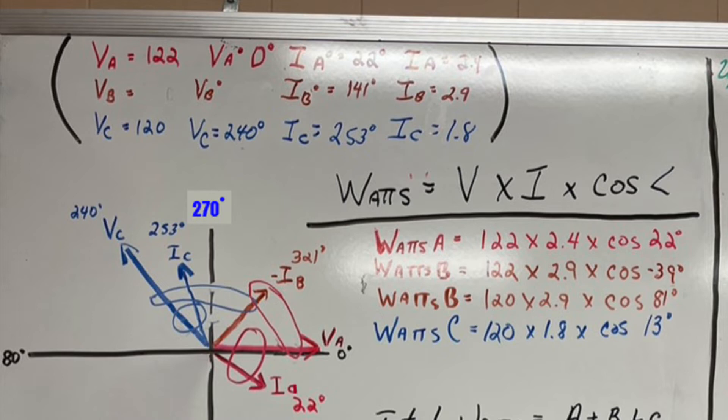Now phase B, what we have to do, remember it's this current passes both potential coils and it's flipped 180 degrees reverse polarity. So we're going to go ahead and circle VA all the way to negative IB. And so what are the calculations to be? I'm going to use the voltage A which is 122 volts times the current B which is 2.9 amps times the cosine of negative 39 degrees. 360 minus 321 degrees gives you 39 degrees.